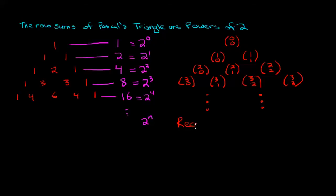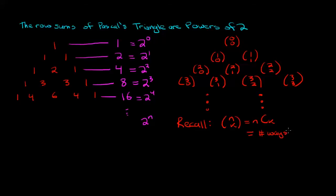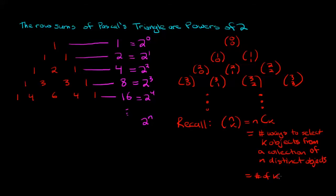Recall that this notation, n choose k, can also be written as nCk. If you don't remember what n choose k is, I do have another video on my other channel which explains exactly what this is counting. But in a nutshell, it's equal to the number of ways to select k objects from a collection of n distinct objects, and that's equivalent to the number of k-subsets of an n-set.